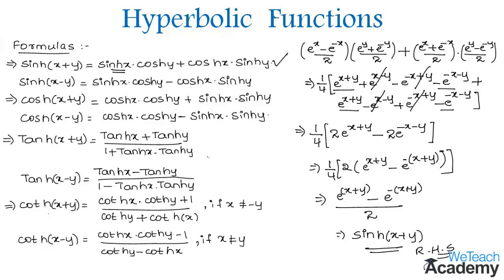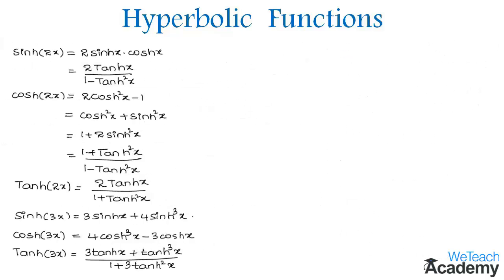Now let us proceed and discuss double argument formulas such as hyperbolic sin(2x) is equal to 2 hyperbolic sin x into hyperbolic cos x. This formula can also be written in terms of tanh. These formulas are similar to those of multiple angle formulas, but here H represents the hyperbolic functions. Now let us try to prove this formula.